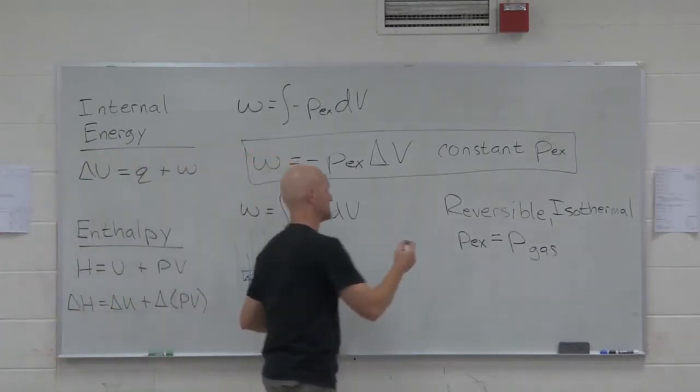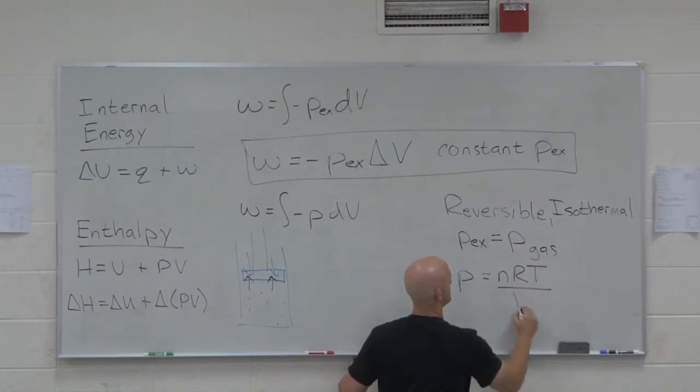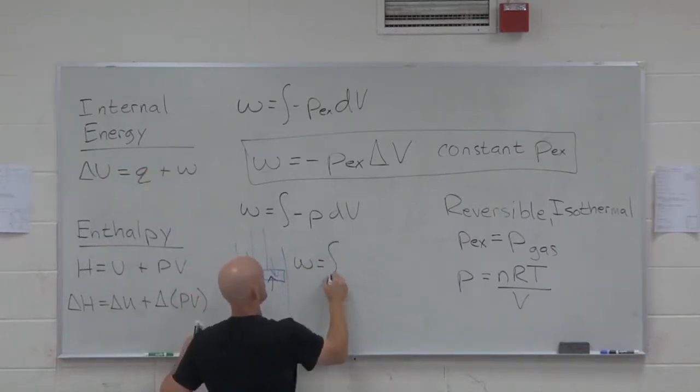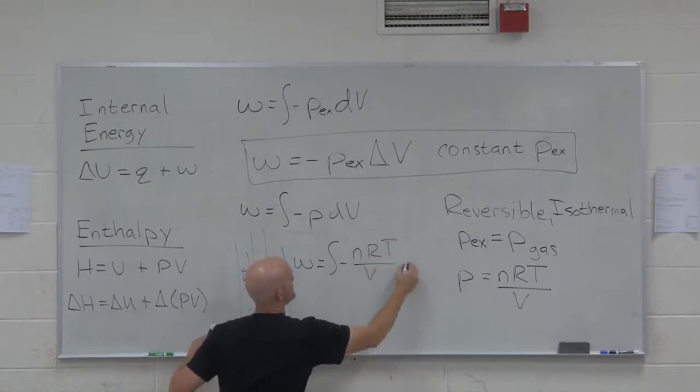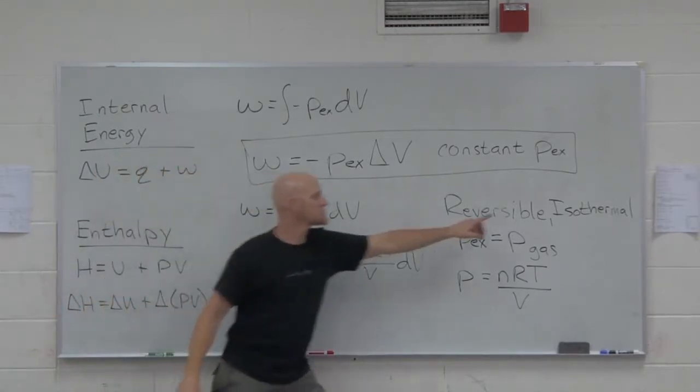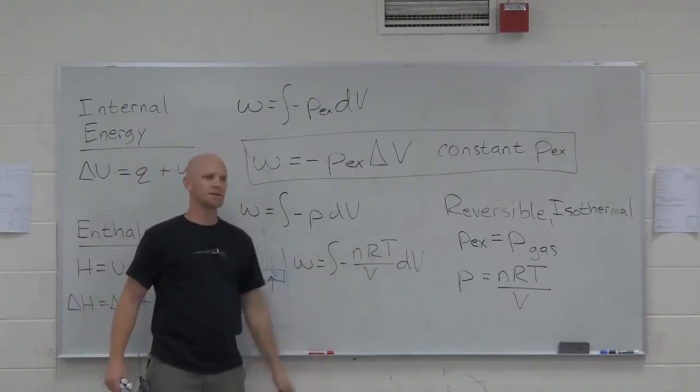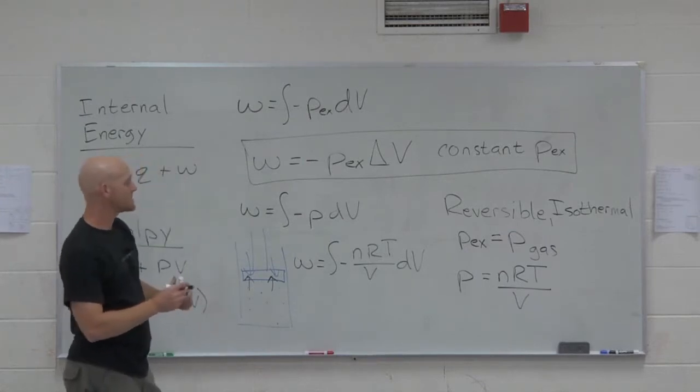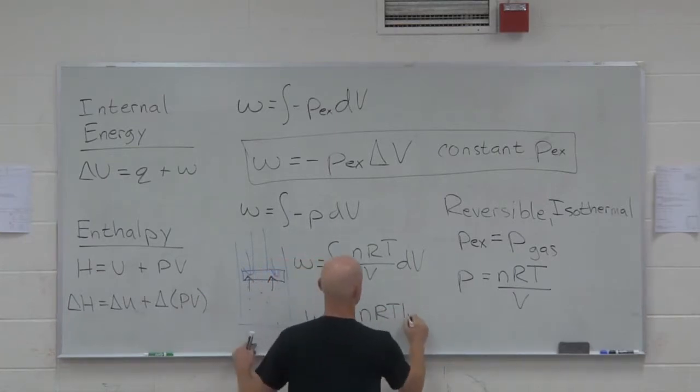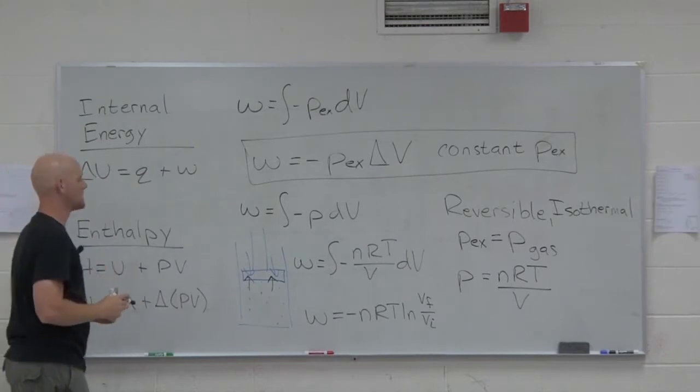So it's not necessarily something I can just pull out in front of the integral. In fact, if it's a perfect gas, what's the pressure of a perfect gas actually equal? Perfect gas law, nRT over V. And so in this case, work turns into the integral of negative nRT over V dV. Now in this case, assuming the moles of gas is constant, R is a constant, and because we're doing it isothermally, temperature is constant, these pull out in front of the integral. But what's the integral of 1 over V dV? Natural log. And so for a reversible isothermal expansion, your work in this case is negative nRT ln V final over V initial. So that's the other one on your sheet there.